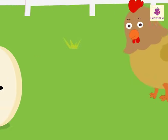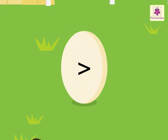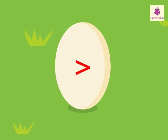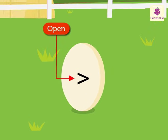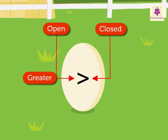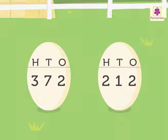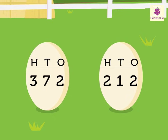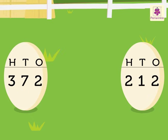Do you know, the sign used to show the greater or lesser number looks like the alphabet V on its side. The open side of the sign always points towards the greater number. The closed side of the sign always points towards the smaller number. Thus, we show 372 is greater than 212 using the sign like this.